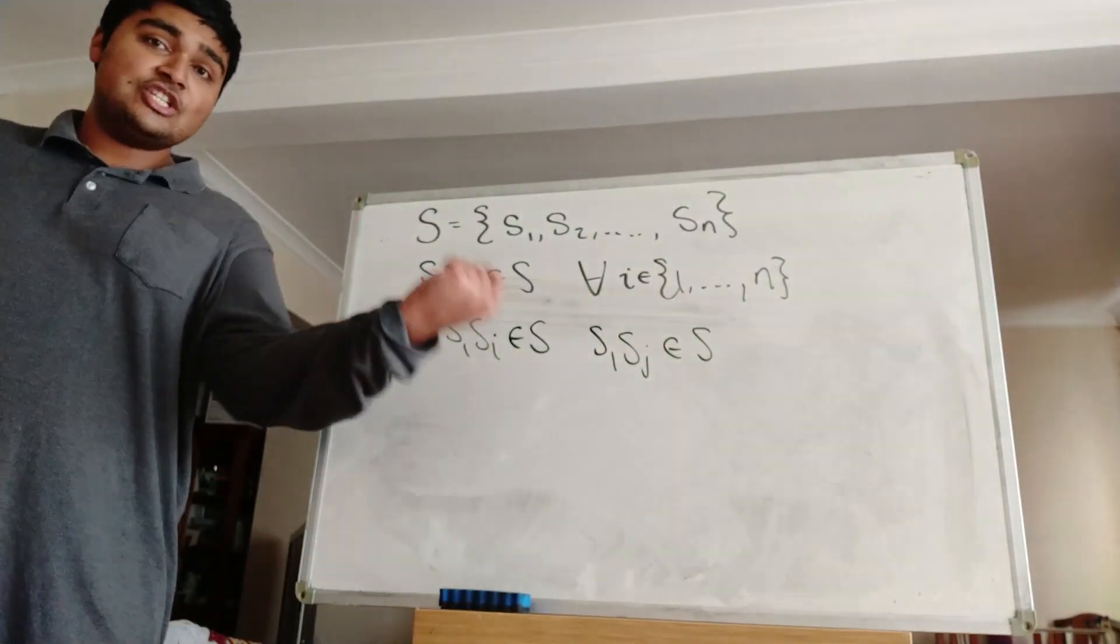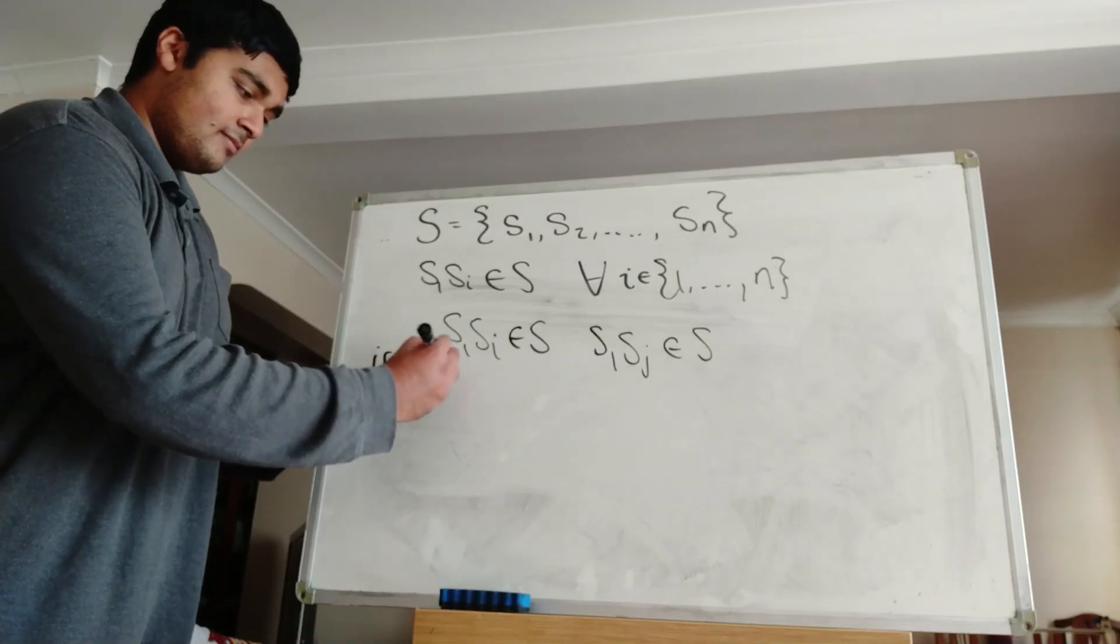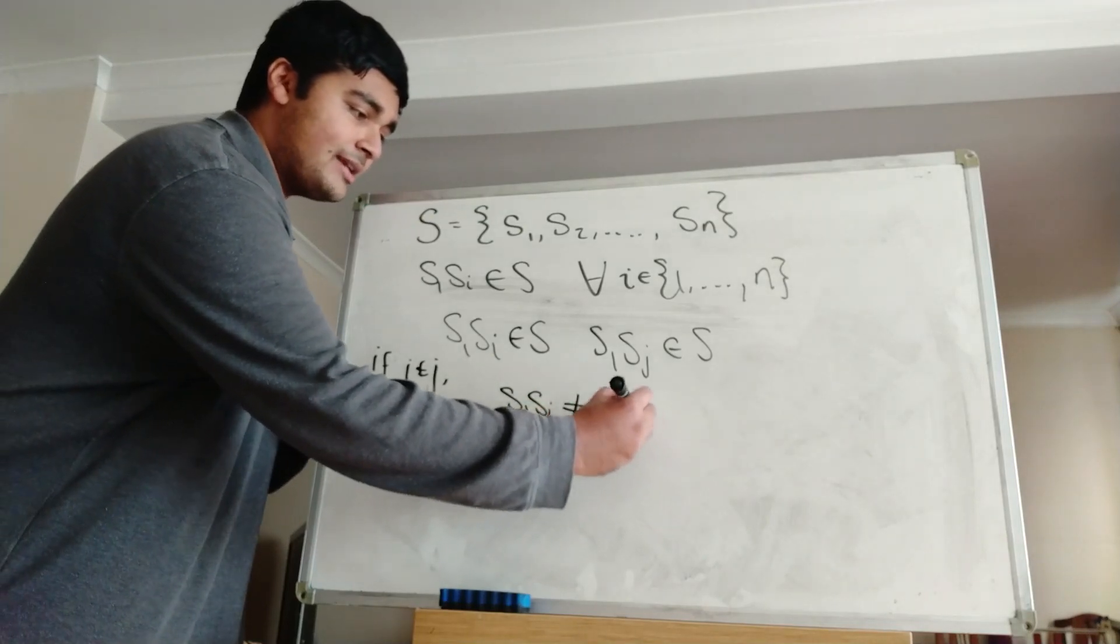But notice that if I and J are distinct, so if I does not equal J, then we have that S1 SI cannot equal S1 SJ.